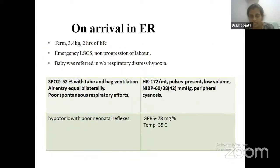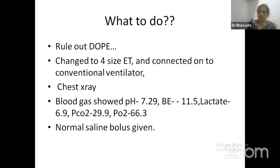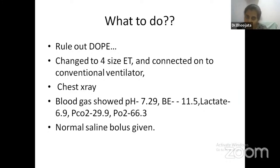This baby was maintaining only 52% saturations. We started bagging with oxygen connected to the bag, but there was no improvement in oxygen saturations. We followed the DOPE approach — displacement of tube, obstruction with secretions, or pneumothorax. We found a 3.5 size tube with a leak, so we changed the ET tube to size 4 and connected, then shifted the baby to NICU on conventional ventilator. We did a chest x-ray and blood gas showing pH of 7.29, base excess of minus 11, lactate 6.9, PO2 29.9, and CO2 of 66.